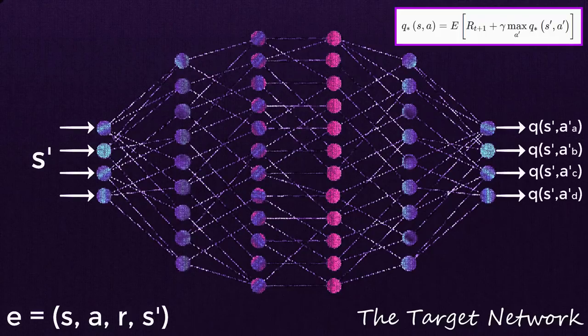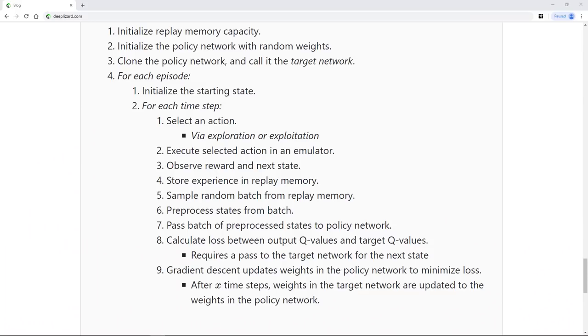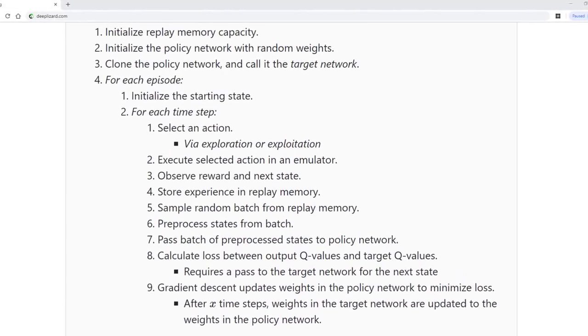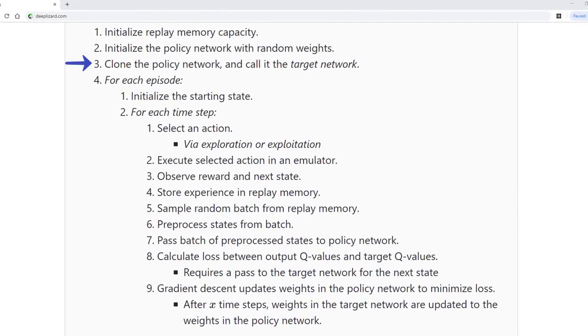Alright, so now let's just highlight what's changed in our training summary since we've introduced this target network. For the most part, this is all the same. We only have a few tweaks. The first change is that we now have a new step at the start where we clone the policy network and call that clone the target network. Additionally, when we calculate the loss between the queue value outputs from the policy network and the target queue values, we do this using the new target network now rather than with a second pass to the policy network. The last change is just that we update the target network weights with the policy network weights every X time steps.